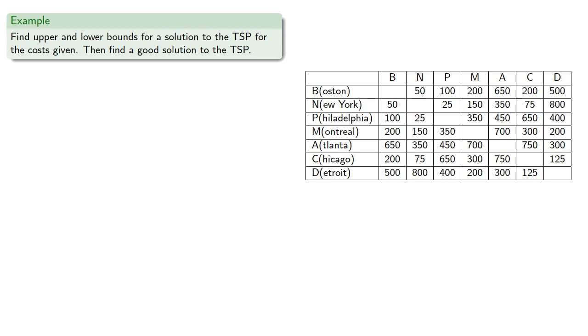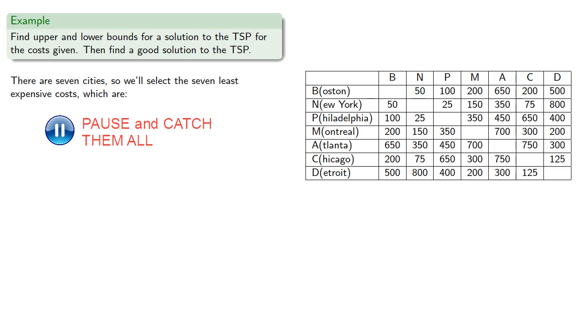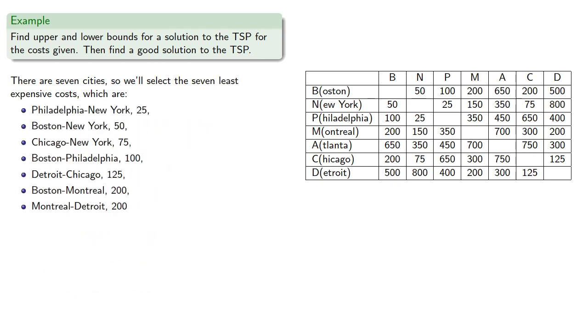Let's start off by finding upper and lower bounds for a solution. And then let's see if we can find a good solution. There are seven cities, so we'll select the seven least expensive costs, which are for total cost of 775, a lower bound for the minimal weight Hamilton circuit.